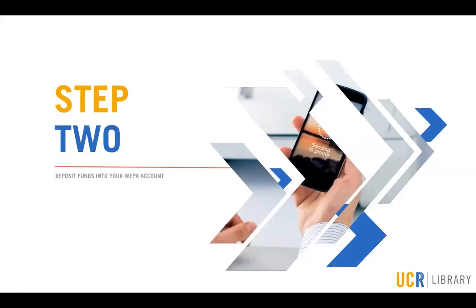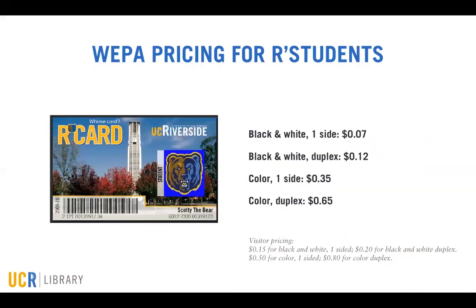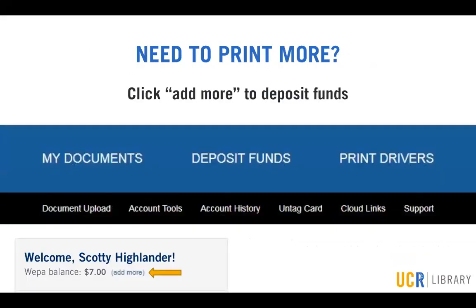Step two — here's how to deposit funds into your WEPA account. After you've logged in, you should see your account balance right below your name. All UCR students will receive $7 in their WEPA account every quarter, which replaces your quarterly quota printing allowance. UCR students will also receive discounted pricing: $0.07 for black and white one-sided, $0.12 for black and white duplex, $0.35 for color one-sided, and $0.65 for color duplex. Visitor pricing is shown below. If you need to print more pages, click Add More to deposit additional funds.